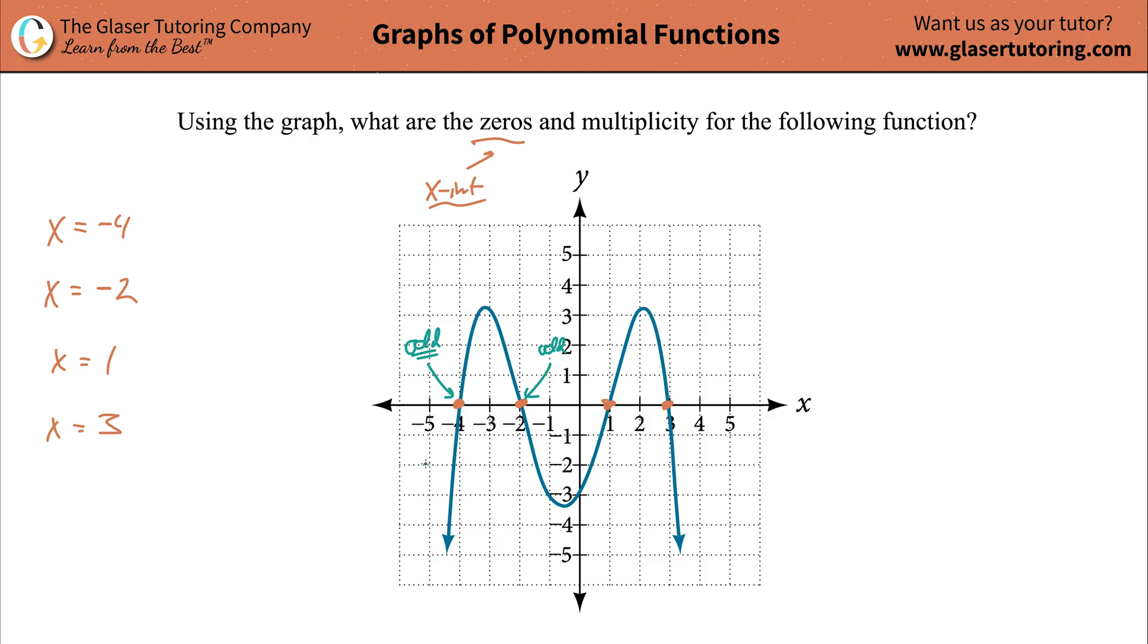Now it turns out that if there's no snaking when it crosses the x-axis, well then the odd number is going to be the lowest odd number of 1, if it just looks like it linearly crosses almost, so to speak.